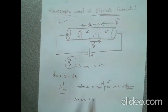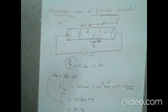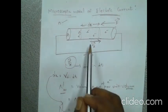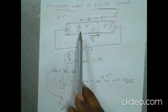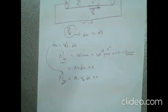Since dx equals VD into dt, the total number of electrons in this volume is equal to A into VD into dt into n. This gives us the total number of electrons in this particular volume during the small time interval dt.